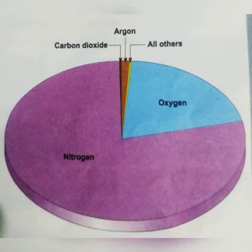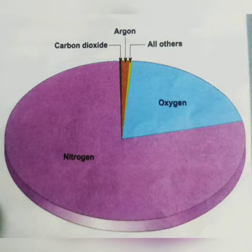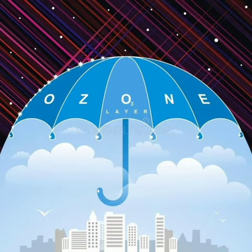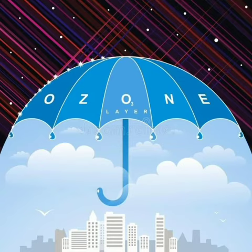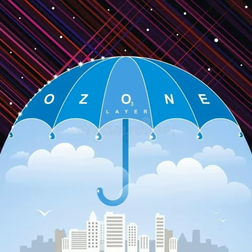The atmosphere protects life on Earth from the harmful rays of the sun. It consists of various gases in different proportions. Nitrogen is the most abundant gas, present at 78 percent. Oxygen makes up 21 percent and is most important for the survival of living organisms. Other gases — carbon dioxide, hydrogen, krypton, argon, and helium — are also found. Plants require carbon dioxide for preparing their own food.